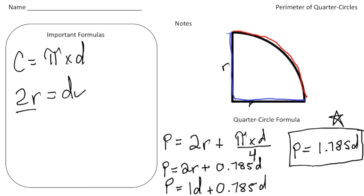Put a star there, a happy face, do whatever you've got to do, because this is the formula we're going to use to find the perimeter of any quarter circle. So let's now use this in a problem.